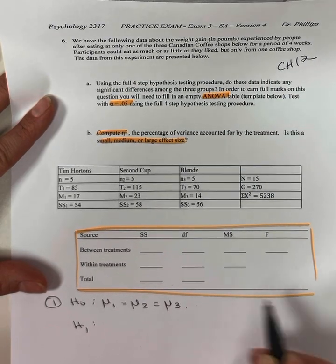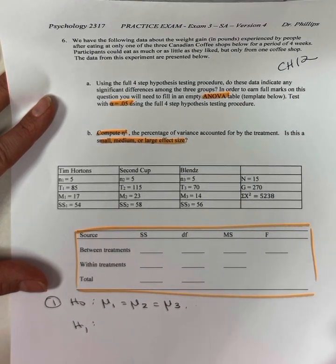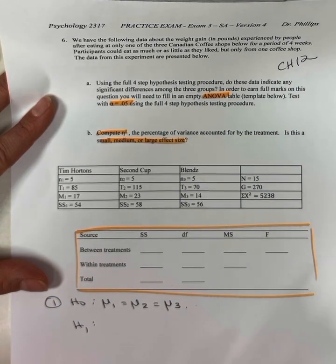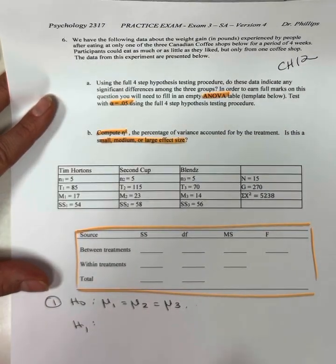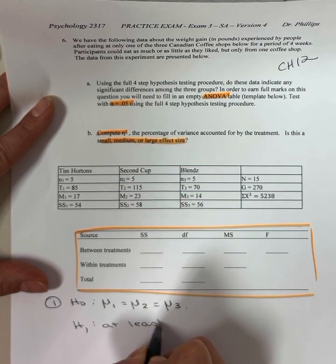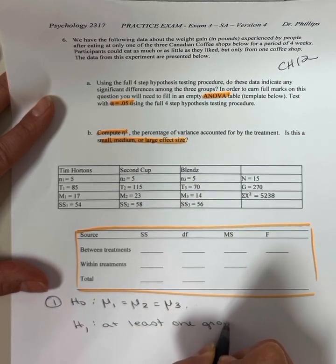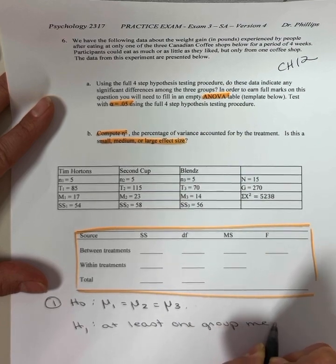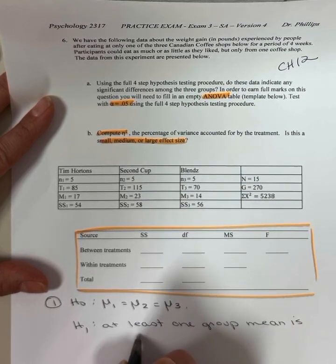If we had more, we would keep going. The alternate hypothesis, this is the only time that you don't have a mathematical version of it. It's at least one group mean is different.